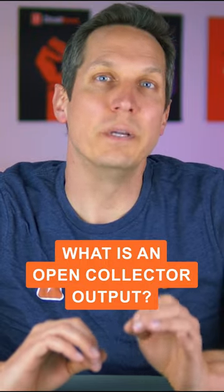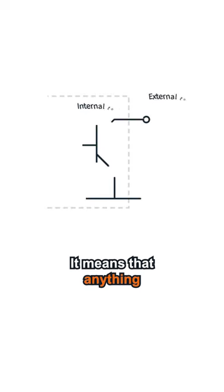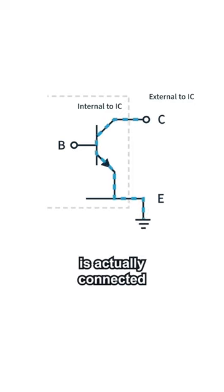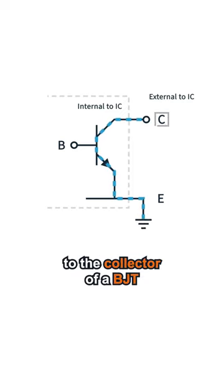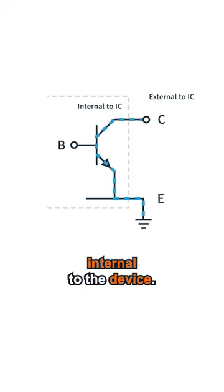When you hear that a device has an open collector output, it means that anything that is connected to the peripheral is actually connected to the collector of a BJT internal to the device.